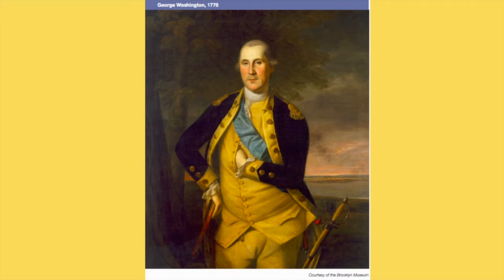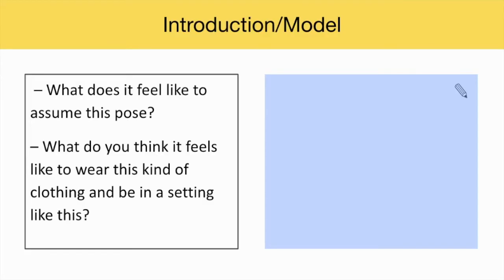Show students the portrait of George Washington by Charles Wilson Peale on this slide. Ask them to stand and strike the same pose as young George Washington. Ask students: what does it feel like to assume this pose? What do you think it feels like to wear this kind of clothing and be in a setting like this?